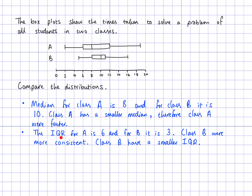If comparing standard deviation, look at which one is smaller, state that one is smaller, and then say therefore they were more consistent. The other thing we can look at is the skew — how the data is distributed. For class A, the median is closer to the lower quartile, so this is positively skewed. For class B, the median is closer to the upper quartile, so this is negatively skewed. So A has a positive skew and B has a negative skew.